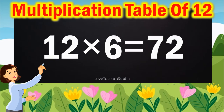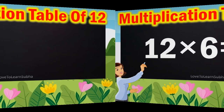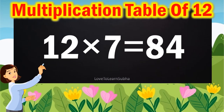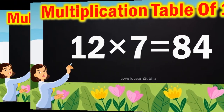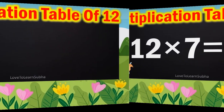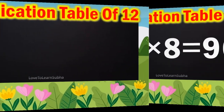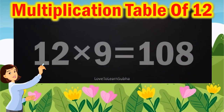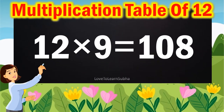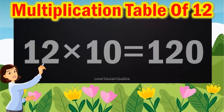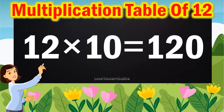12 6s are 72. 12 7s are 84. 12 8s are 96. 12 9s are 108. 12 10s are 120.